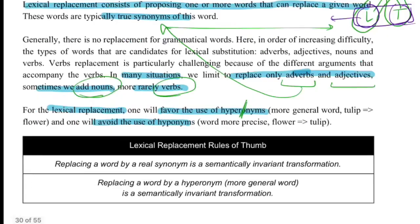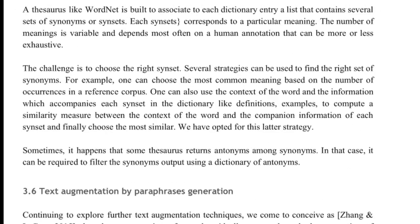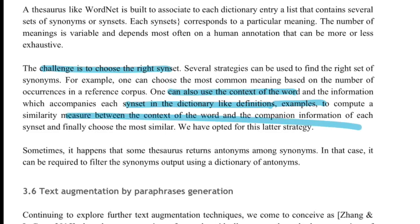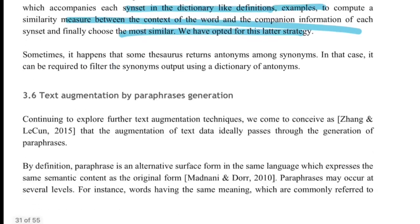A challenge is choosing the right synset, since WordNet can return multiple synsets for a single word. The strategy is: for a given target word, use its surrounding context — words to its left and right — look up all synsets in WordNet, extract their definitions and examples, concatenate them into a bigger context, then calculate cosine similarity between that definition-plus-example context and the original text context. The synset with the highest match is selected as the replacement.